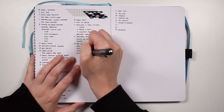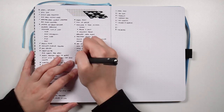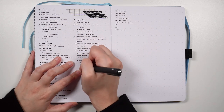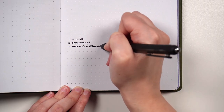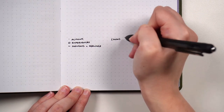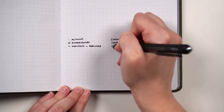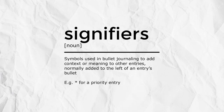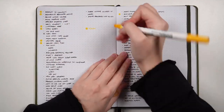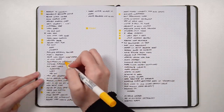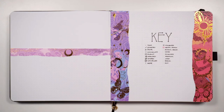Rapid logging is the process of adding information to your bullet journal as concise bulleted entries, where the bullet represents the type of information captured. In bullet journaling, the term bullet describes the symbol representing different types of entries. The original method uses a dot for tasks, a circle for events, and a dash for notes. Signifiers are symbols used to add context or meaning to entries, placed beside the bullet — typically to the left — for example, an asterisk for an important entry. A bullet journal key is the set of bullets, signifiers, or color codes you typically use in your journal, sometimes set up as a custom collection.